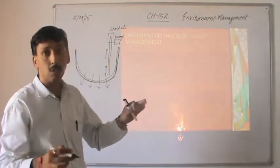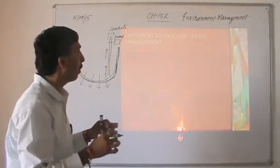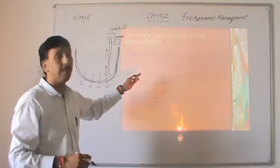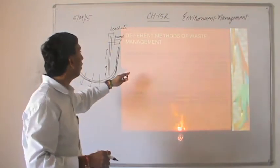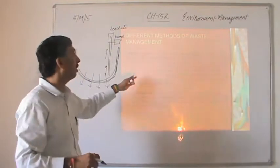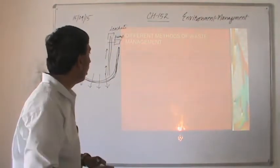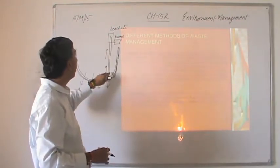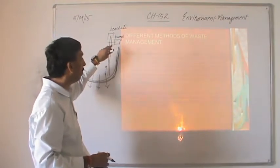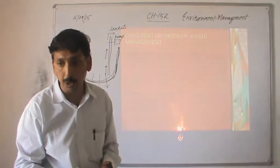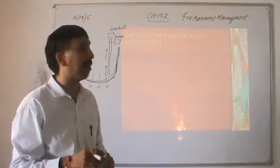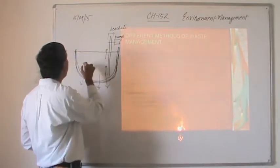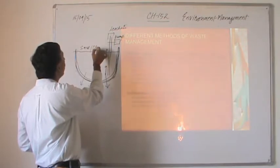The waste collected from several sources is spread out in thin layers and covered with clay, plastic foam in the landfill. The bottom is lined with thick plastic and sand to protect from contamination due to percolation of leachate. Methane produced from anaerobic decomposition is used to generate electricity and heat. Once the landfill is filled with solid waste, it is covered with clay or gravel.